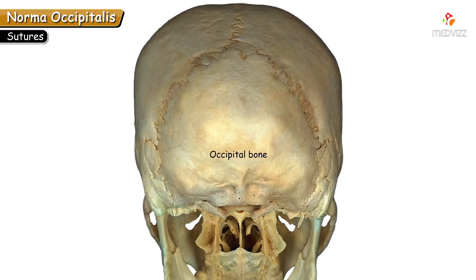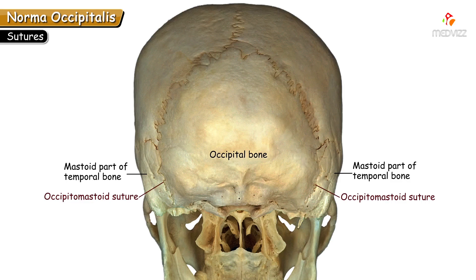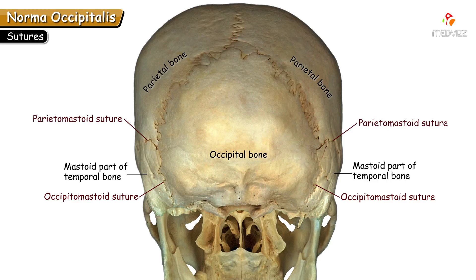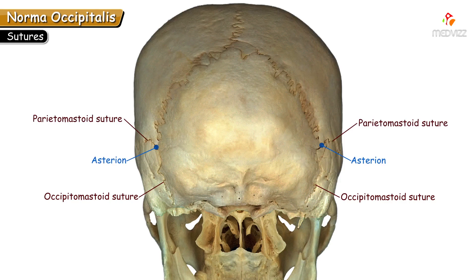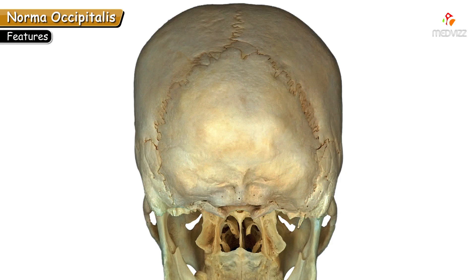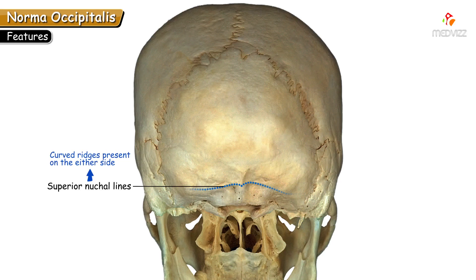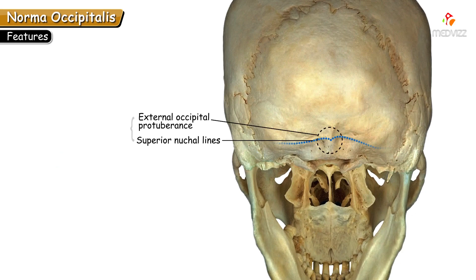Laterally, where the occipital bone meets the mastoid part of the temporal bone, is the occipitomastoid suture; where the mastoid part meets the parietal bone is the parietomastoid suture. The point where these two sutures meet is known as asterion. The external occipital protuberance is a midline projection forming the inferior aspect of norma occipitalis; its tip is the landmark known as inion. On each side of the external occipital protuberance are arching lines termed the superior nuchal lines, which demarcate the head from the neck.